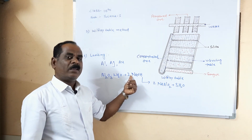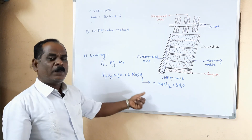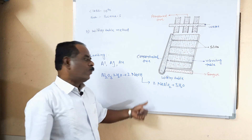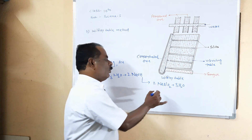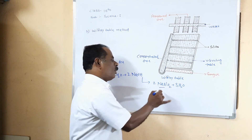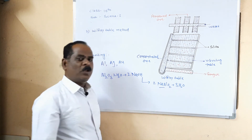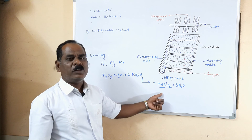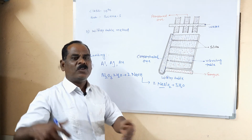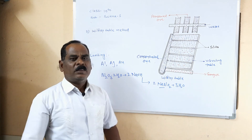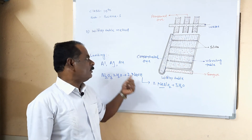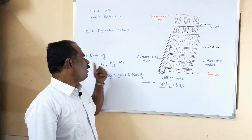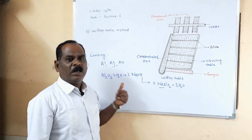Therefore, the gangue particles are separated by filtration. We get only the solution of sodium aluminate, meaning the aluminium and gangue particles are easily separated. This process is called the leaching process.